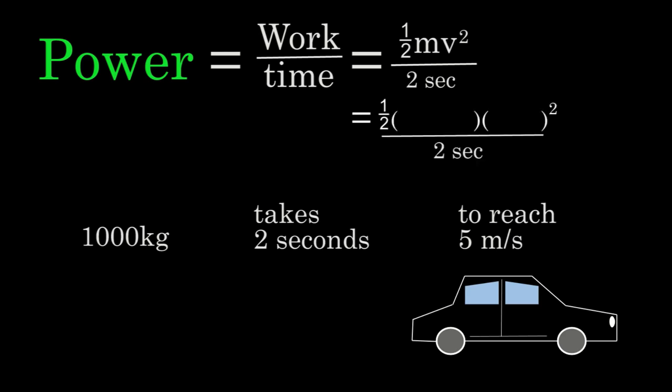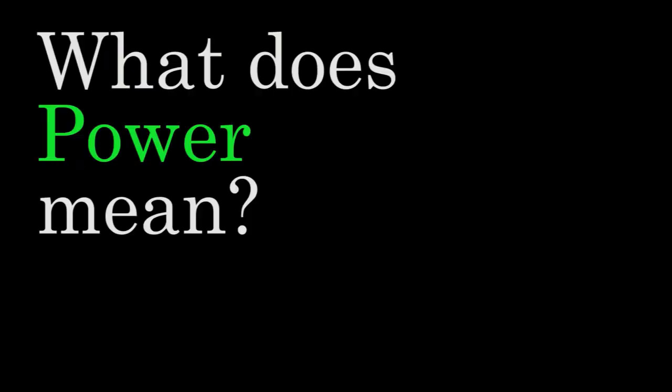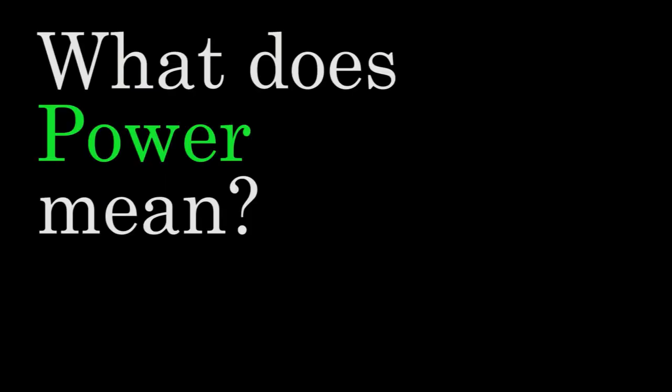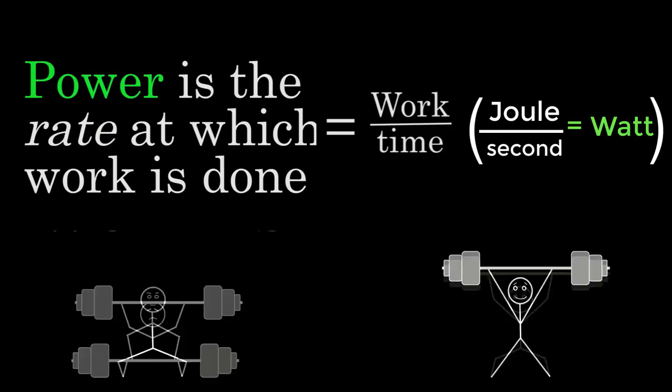If we plug in the values for the mass and the speed, we find that the engine had a power output of 6,250 watts. So what does power mean? Power is the rate at which work is done.